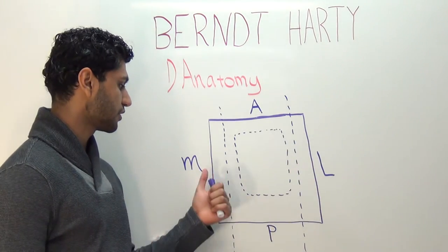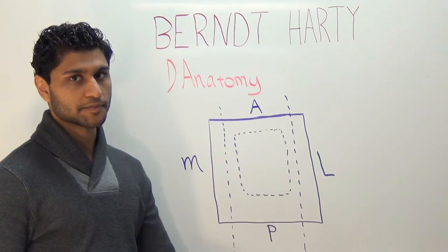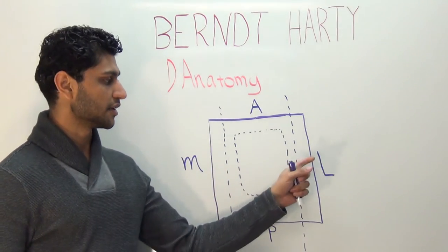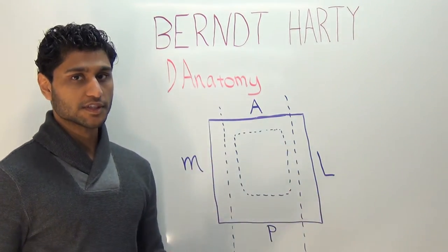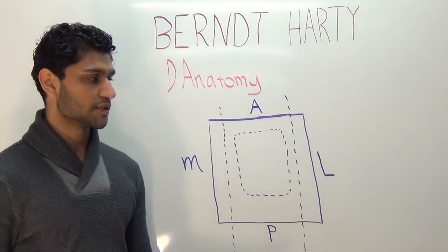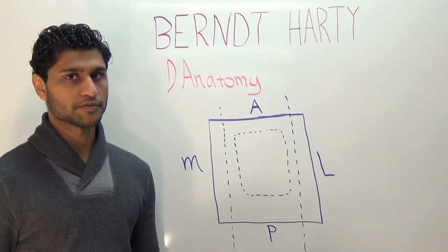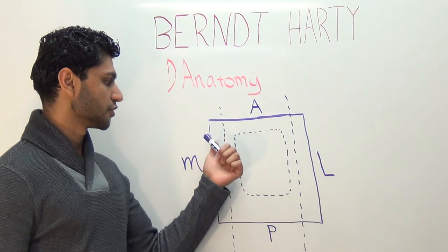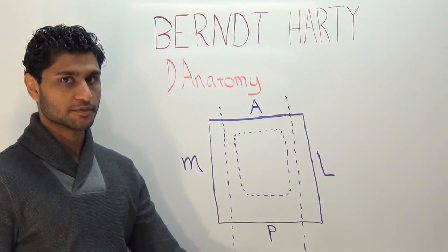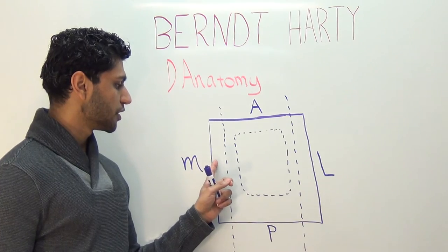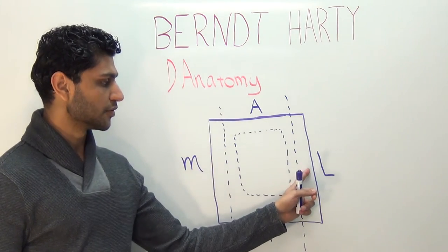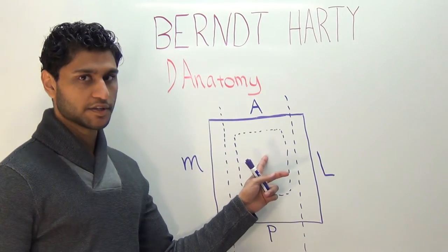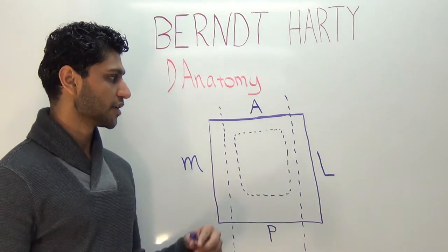The thinnest cartilage is along the most medial and the most lateral rim. However, the thickness of the medial rim is slightly more so than on the lateral rim. Overall, the thickest cartilage of the dome is found in the center. We're going to come back to these points later.